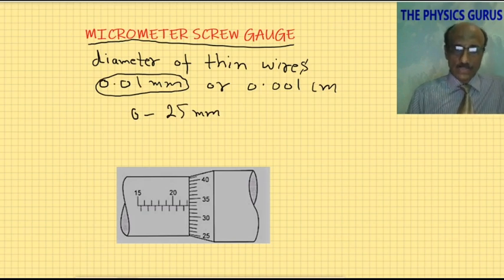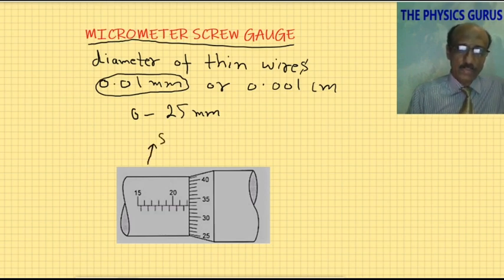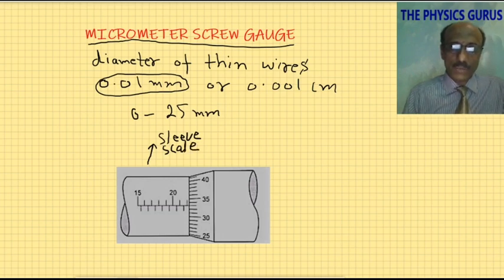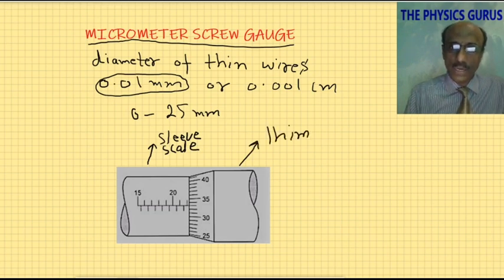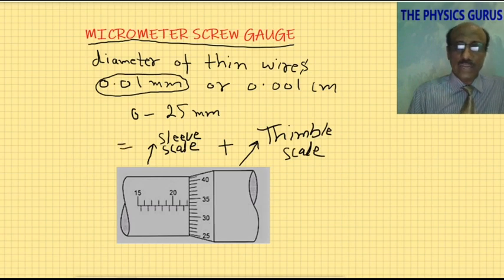There are two scales. The first scale, which I am pointing to right now, is called the sleeve scale. The other reading is represented by the thimble scale. The total reading of the micrometer will be equal to the sleeve scale reading plus the thimble scale reading.